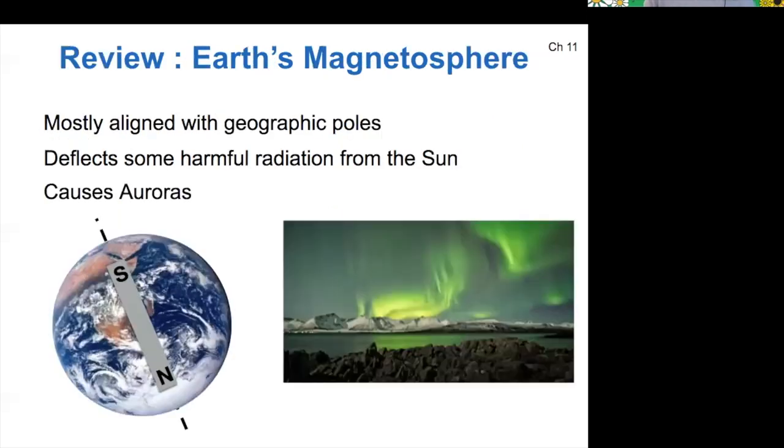To review Earth's magnetosphere, the magnetic field is mostly aligned with the geographic poles. We like to have a magnetic field on Earth because it deflects harmful radiation from the sun. Remember, those particles from the solar wind get trapped along magnetic field lines, get funneled toward the north and south poles, and cause the aurora borealis and aurora australis.